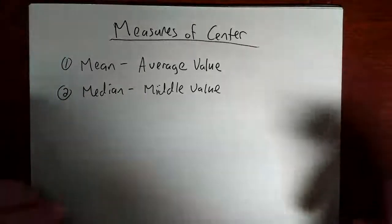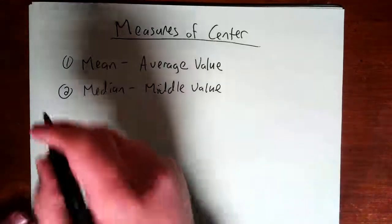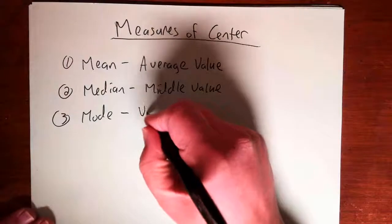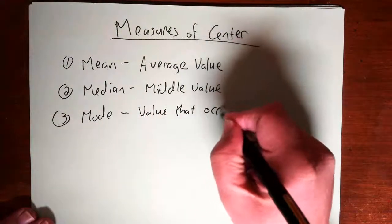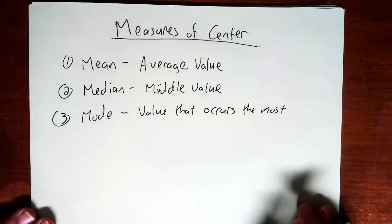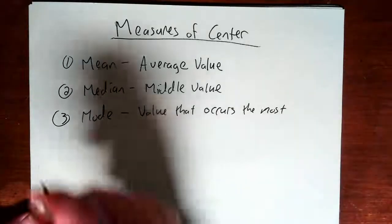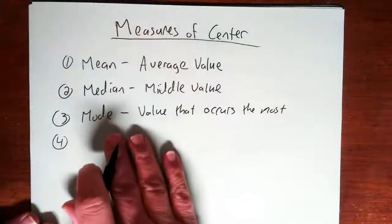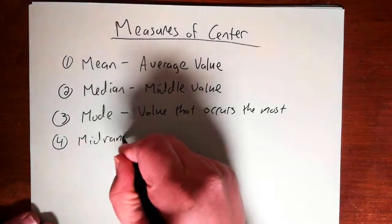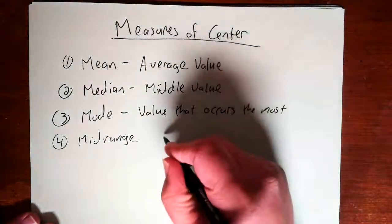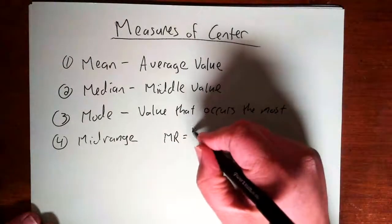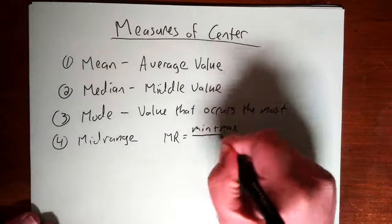So the median actually is, in a sense, the center of the data set. Then we have the mode, which is the value that occurs more than any other value in the data set. Mean, median, and mode are very common, but the book adds a fourth one called the mid-range. The mid-range — we'll use MR — is the minimum value plus the maximum value, divided by two.